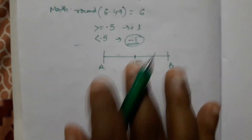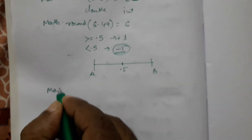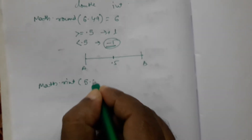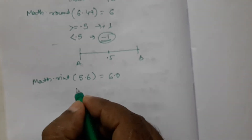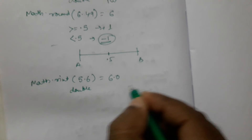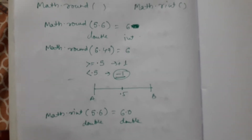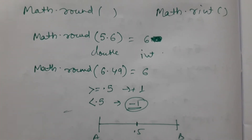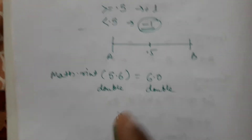So that is Math.round. Now, what is the difference between Math.rint and Math.round? For Math.rint, if we pass 5.6, the answer is also 6, but written as 6.0. That means the argument is double and the return type is also double. In Math.round, the argument is double but the return type is int — that is one difference between rint and round.